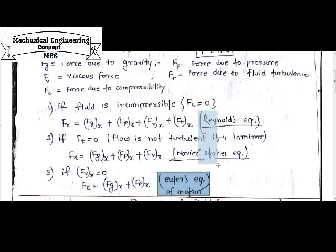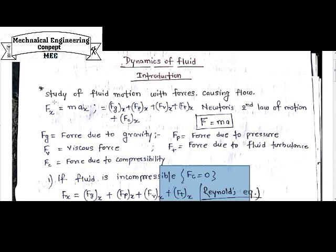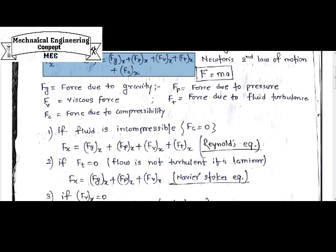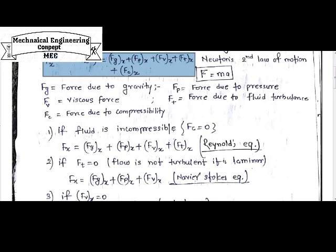So these are the three basic types of equations of motion for fluid when considering the dynamic fluid equation — derived with respect to pressure force, gravity force, viscous force, turbulent force, and compressibility force. This covers the basics of dynamics of fluid, which you need to derive further: the Reynolds, Navier-Stokes, and Euler equations.